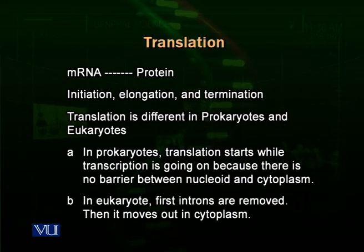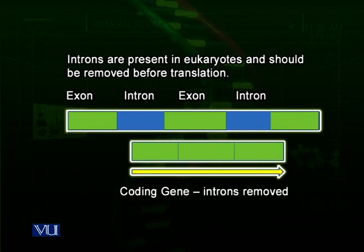There is another difference between prokaryotic and eukaryotic DNA. Eukaryotic DNA has extra sequences integrated in their genes — we call them introns. These introns have to be removed. As you can see in the diagram, there are green sequences of DNA called exons, then comes an intron, then comes an exon, then comes an intron. These exons are the actual parts of genes, while introns are non-coding sequences.